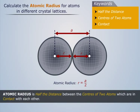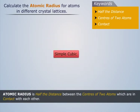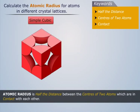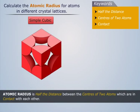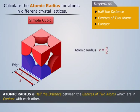Let's try to calculate the atomic radius for different crystal lattices. First, let us start with the simple cubic lattice. We know that a simple cubic lattice has eight corner atoms. Here, the edge of the unit cell consists of two atoms in contact with each other. Since the edge length is A, the atomic radius for a simple cubic lattice is A/2.